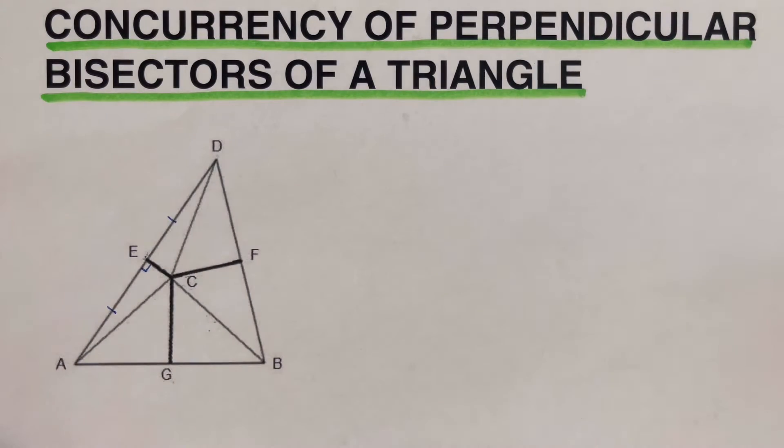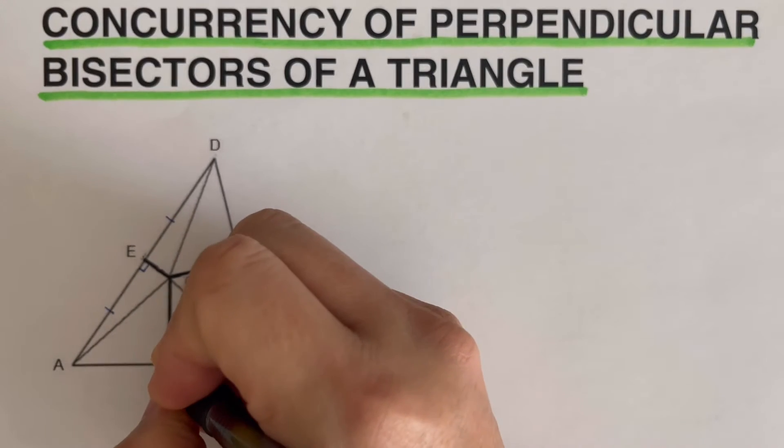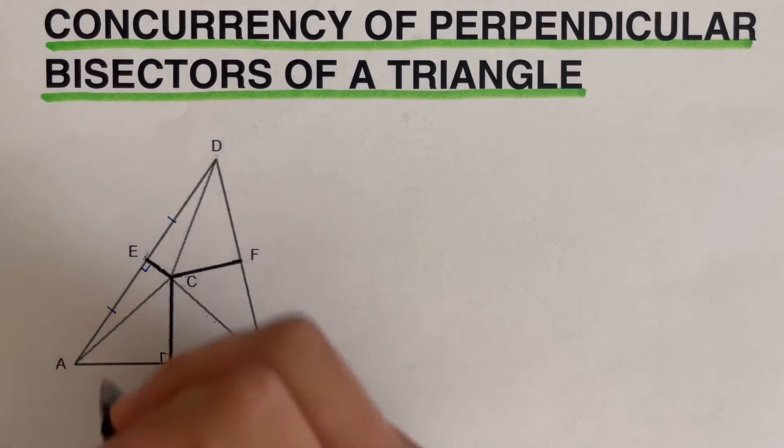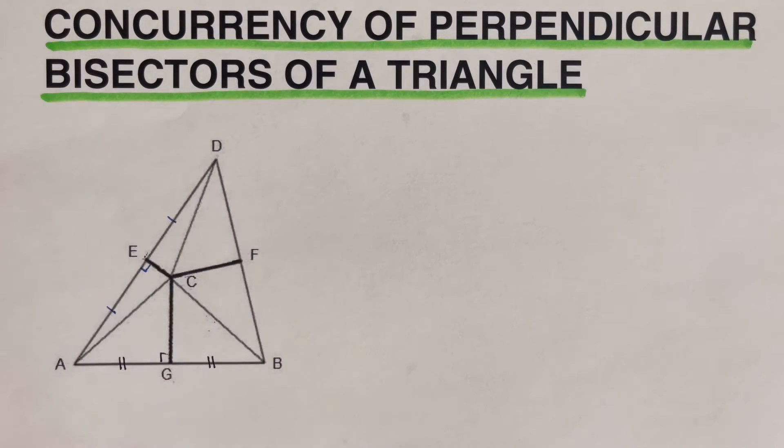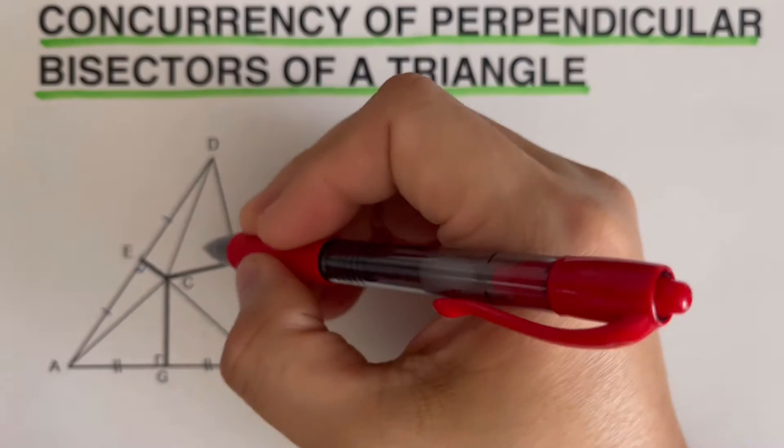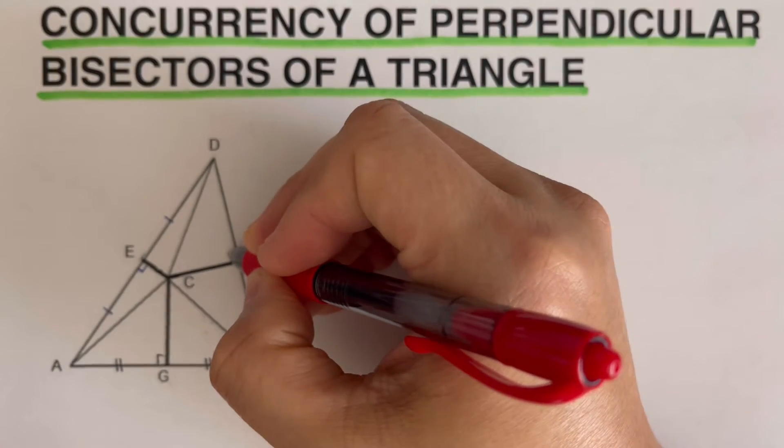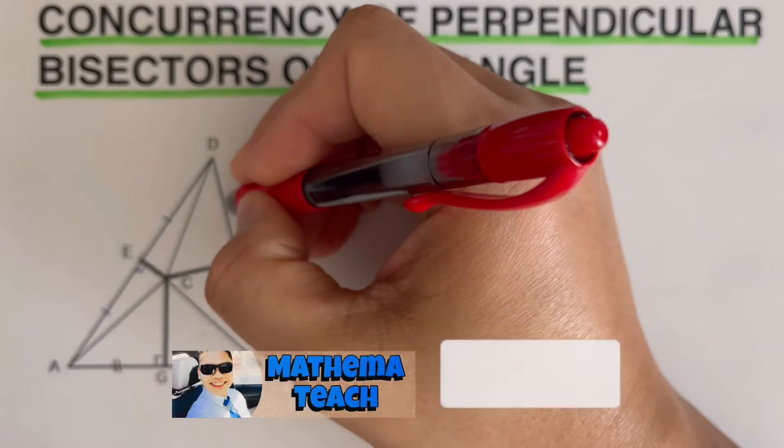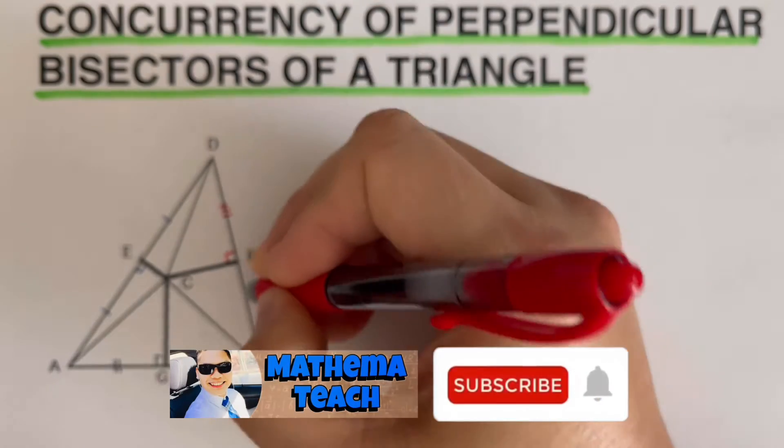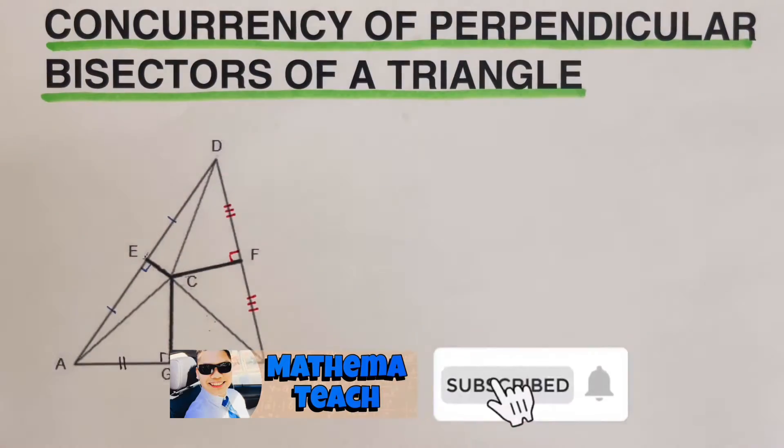And then again, GC is also a perpendicular bisector, so we can go ahead and label this with a right angle right here. And so that tells us that AG and GB are also congruent to each other. And then we also have here, this FC is also a perpendicular bisector. That means we have DF would be congruent to that of FB.